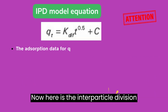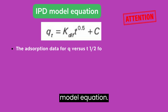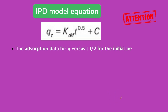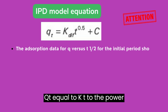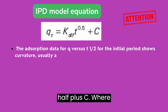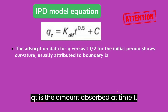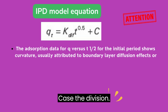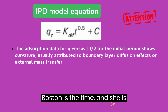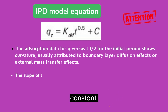Here is the intraparticle diffusion model equation: Qt equals k_diff times t to the power of half plus c, where Qt is the amount adsorbed at time t, k is the diffusion constant, t is the time, and c is a constant.